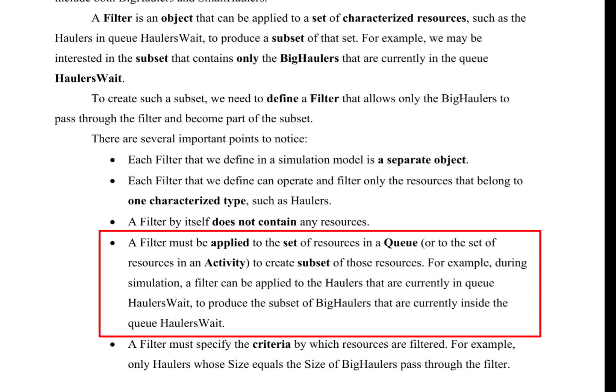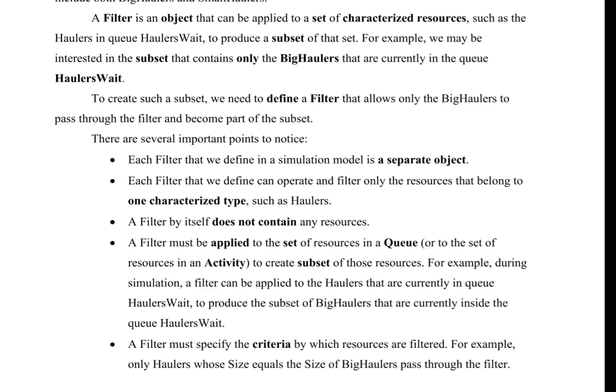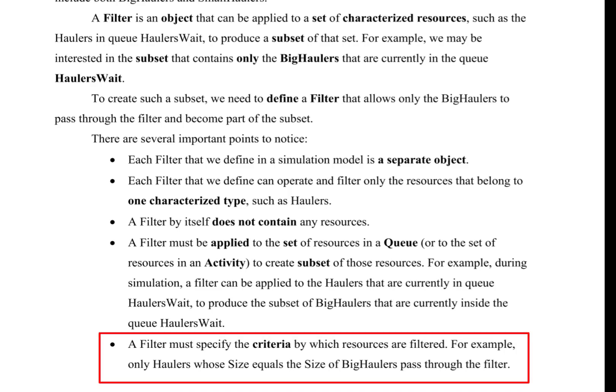For example, during simulation, a filter can be applied to the haulers that are currently in queue hauler's weight, to produce the subset of big haulers that are currently inside the queue hauler's weight. A filter must specify the criteria by which resources are filtered. For example, only haulers whose size equals the size of big haulers pass through the filter.